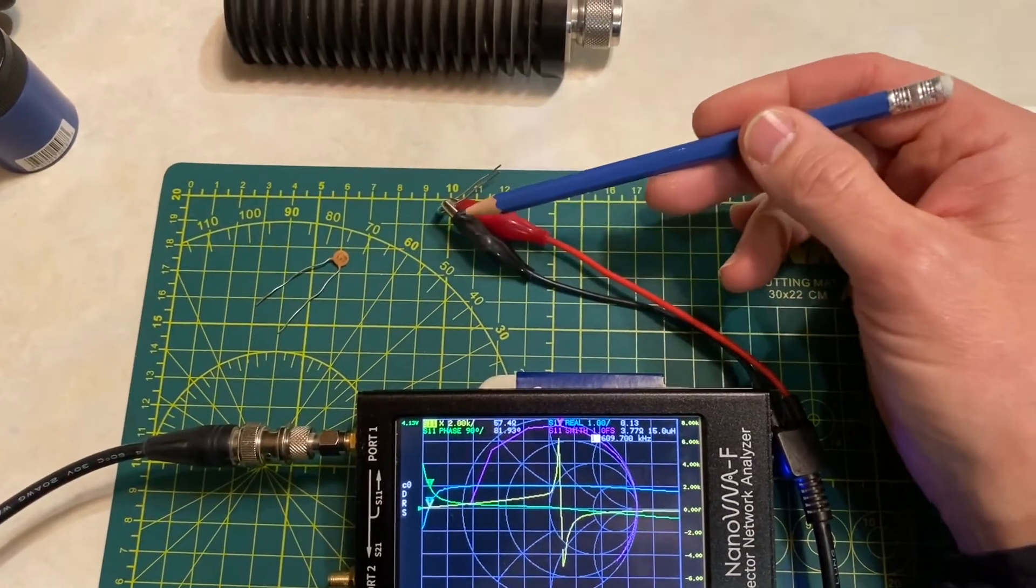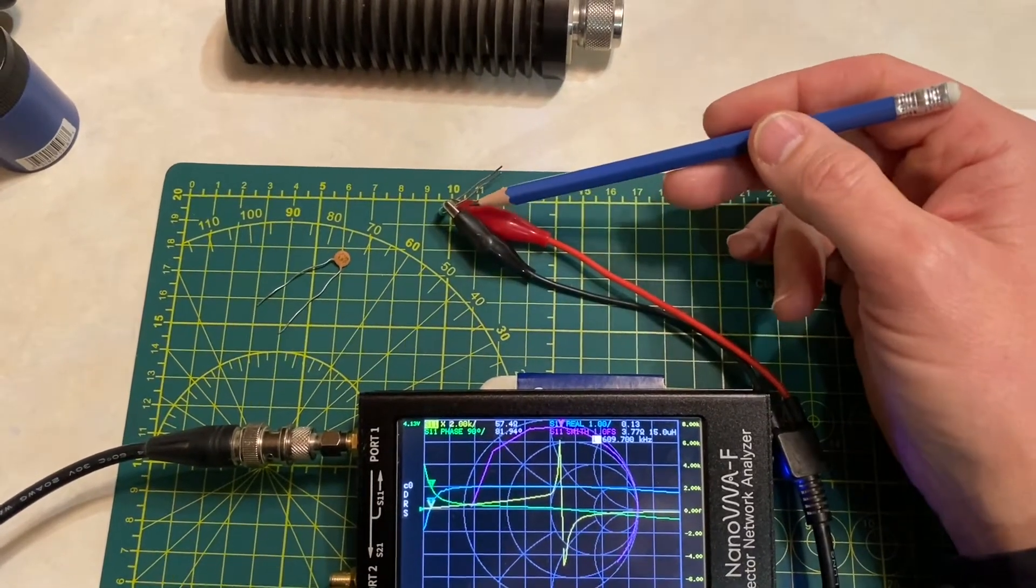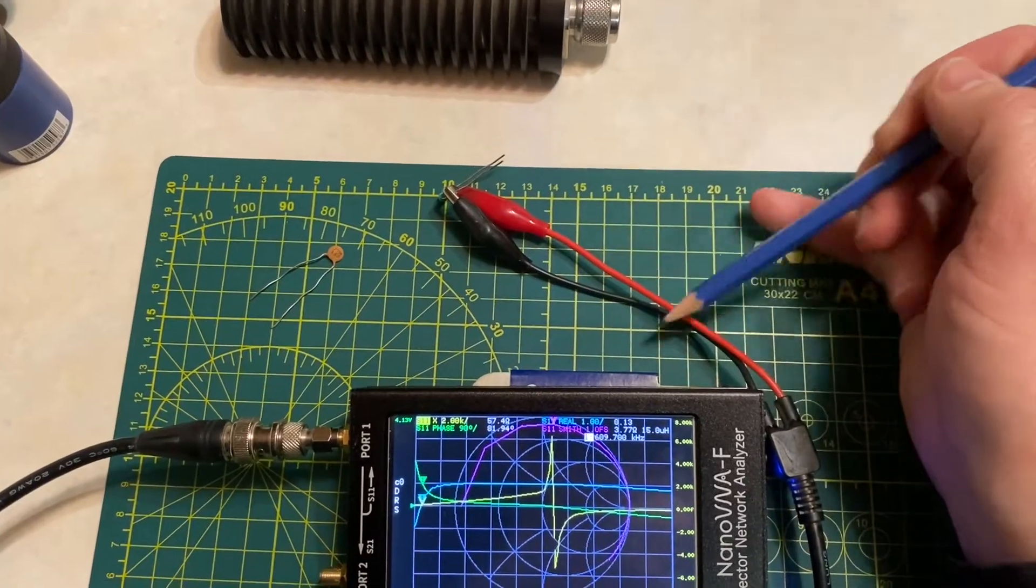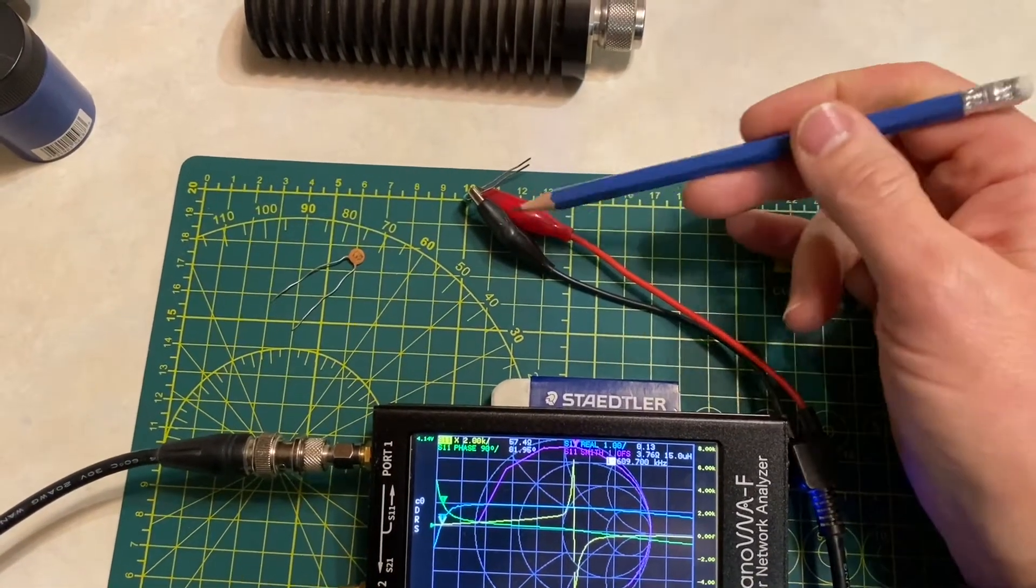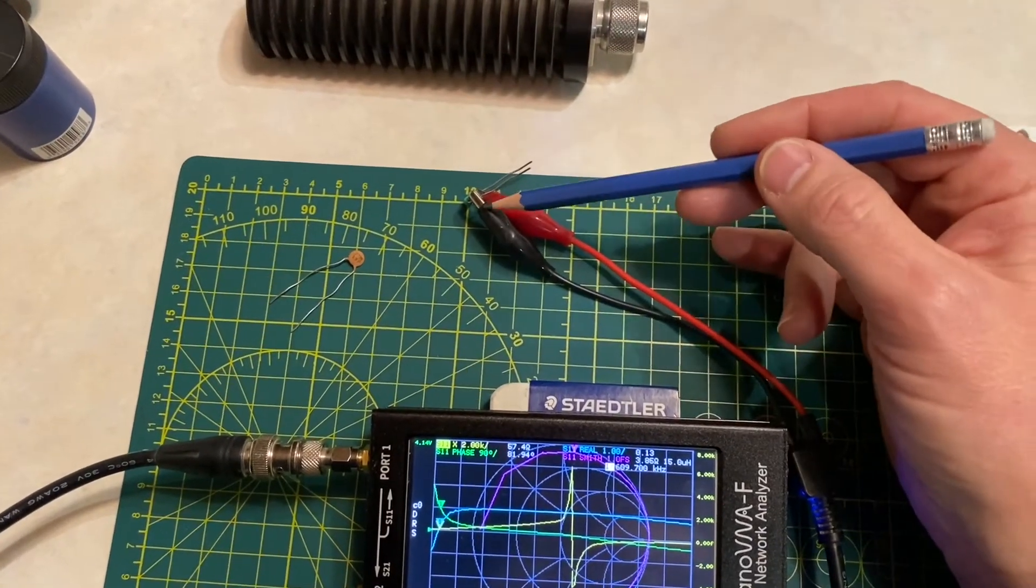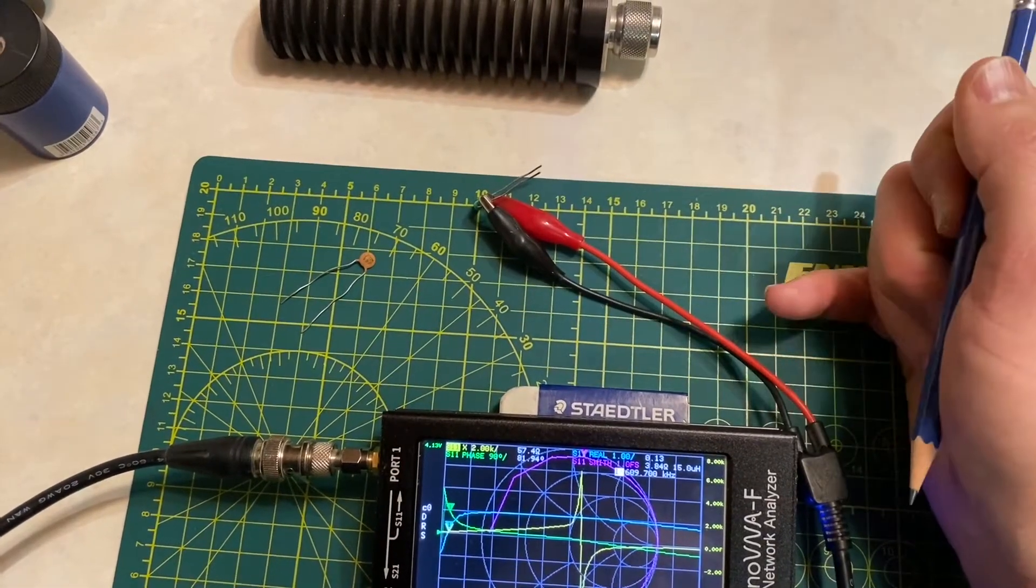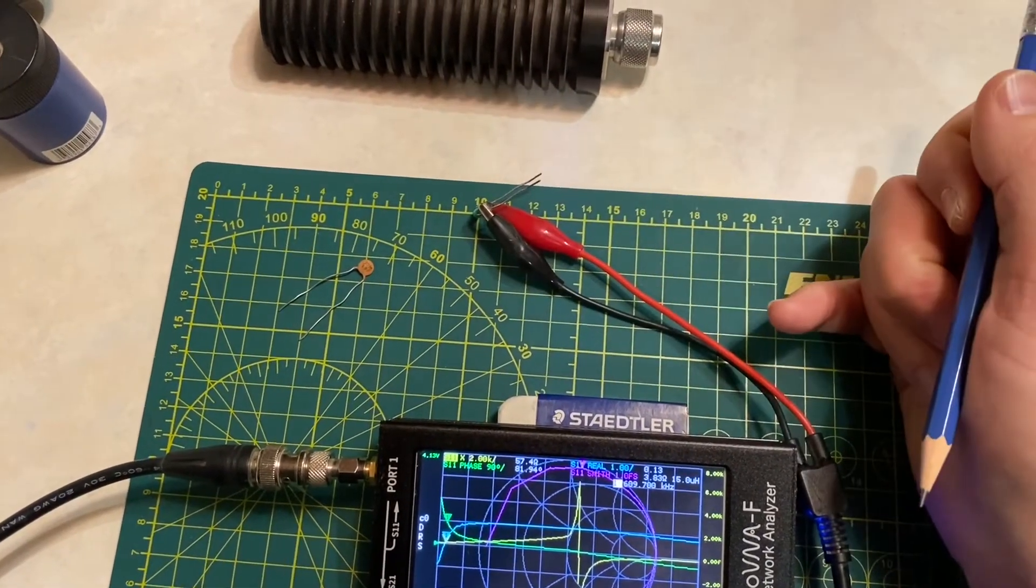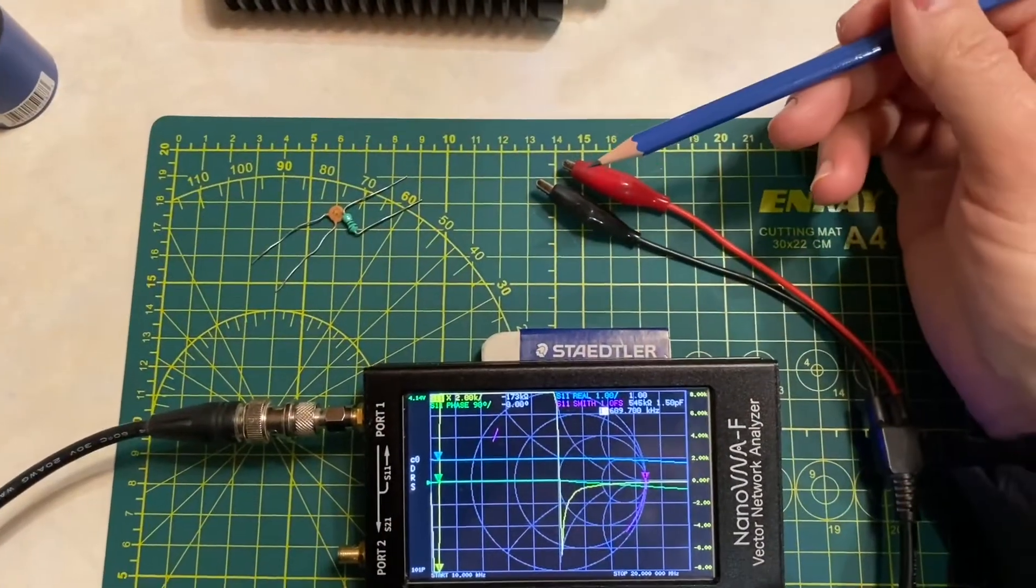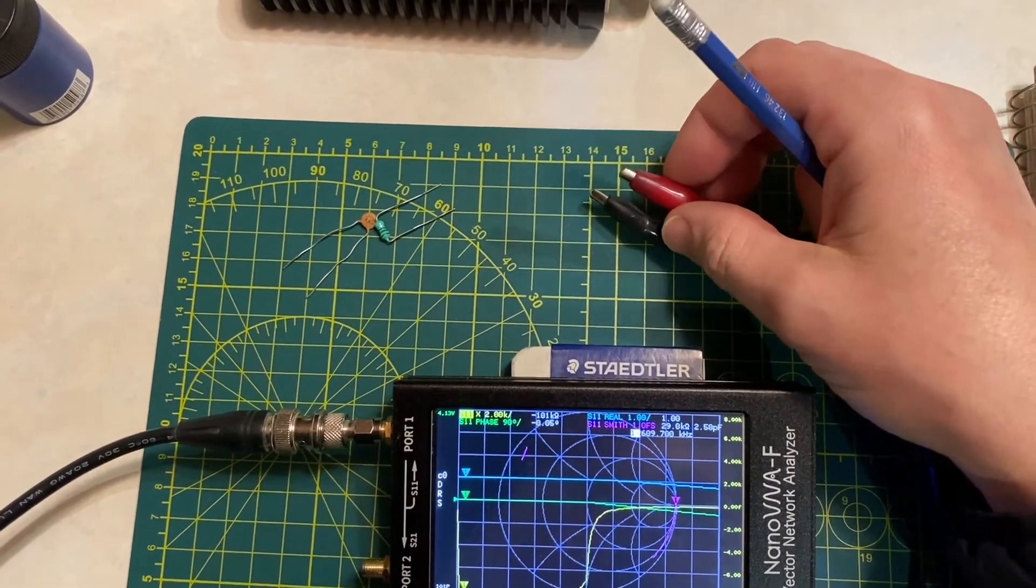The other reason why we can get away with such crude calibration and test fixture is because the frequencies that we're using are quite low. The parasitic elements that come with having such a basic setup are significant at higher frequencies but down in the frequency ranges that we're going to be working at, they're very minimal, so we can actually get away with having a setup that's this simple and it works.